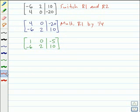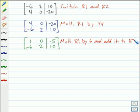My next row operation is going to be to multiply row one by six and add it to row two. That will give me zero, two, negative 20 for my new row two. And row one stays the same.